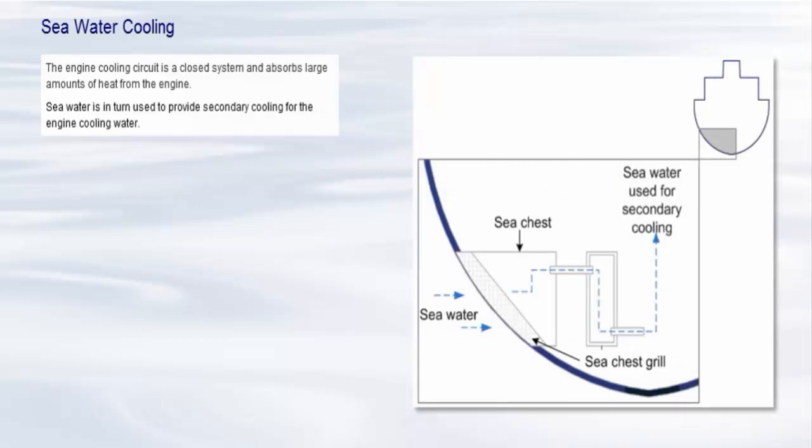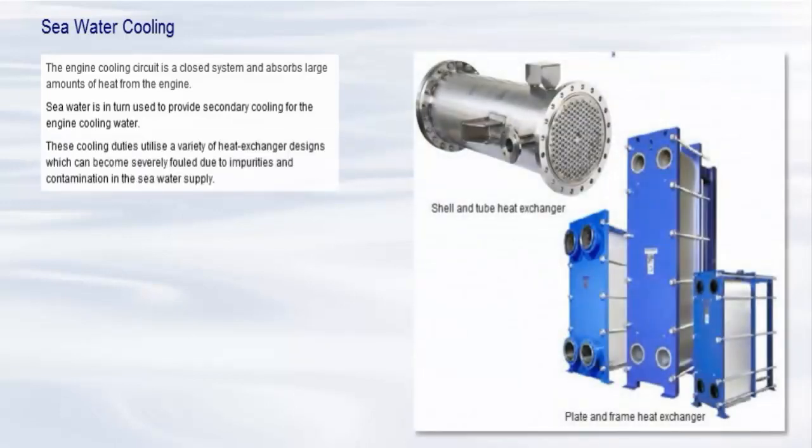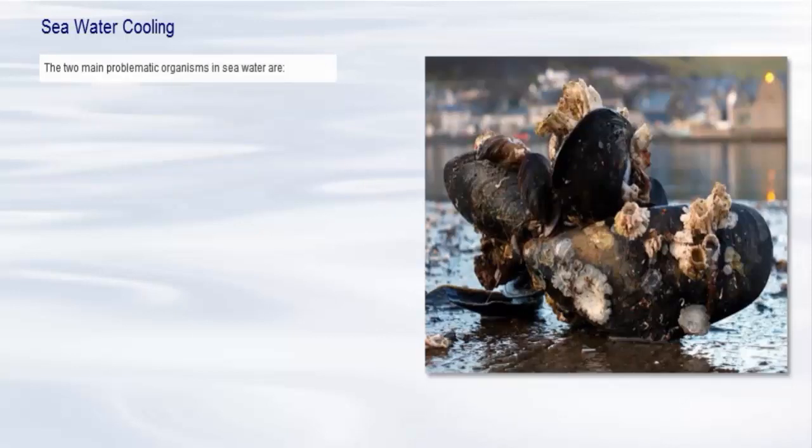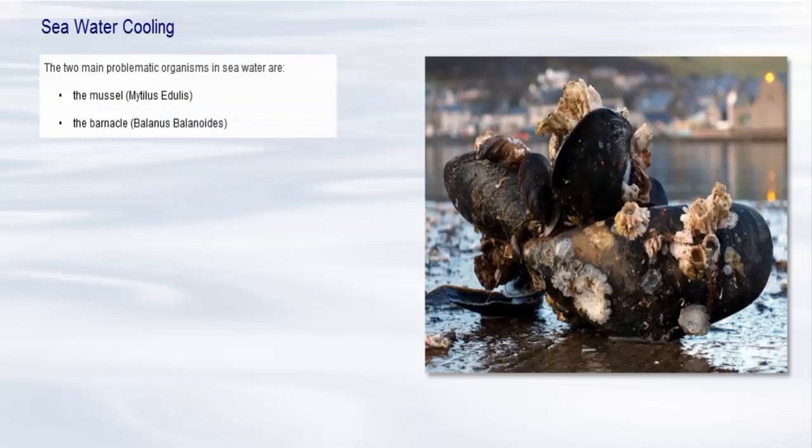Seawater is introduced into the ship through open inlets and stored in containing tanks called sea chests within the body of the hull. The cooling duties utilize a variety of heat exchanger designs, which can become severely fouled due to impurities and contamination in the seawater supply. The two main problematic organisms are the mussel, Mytilus edulis, and the barnacle, Balanus balanoides.